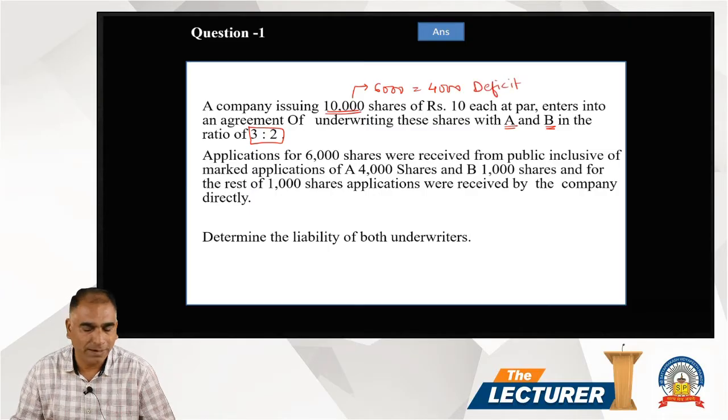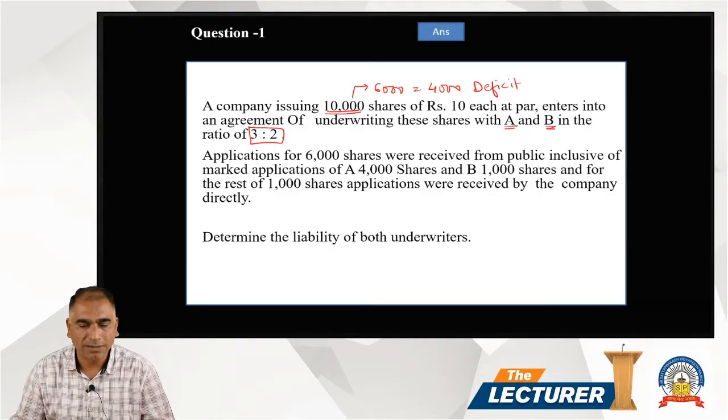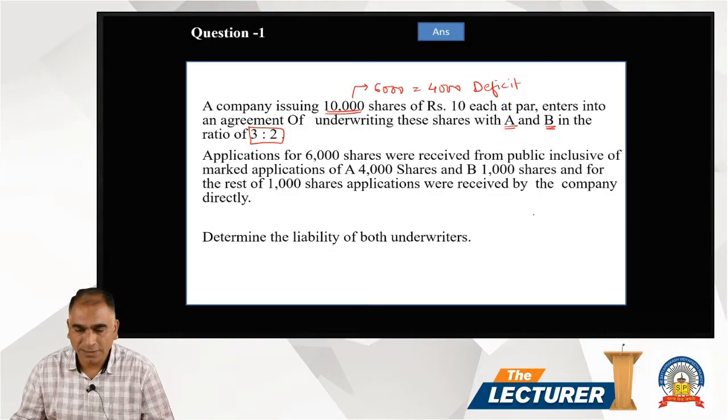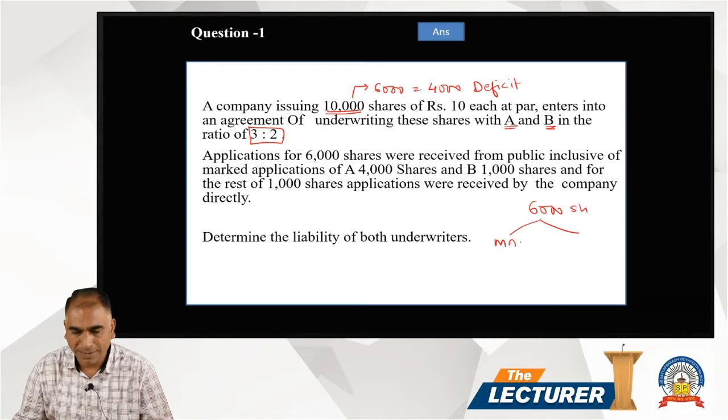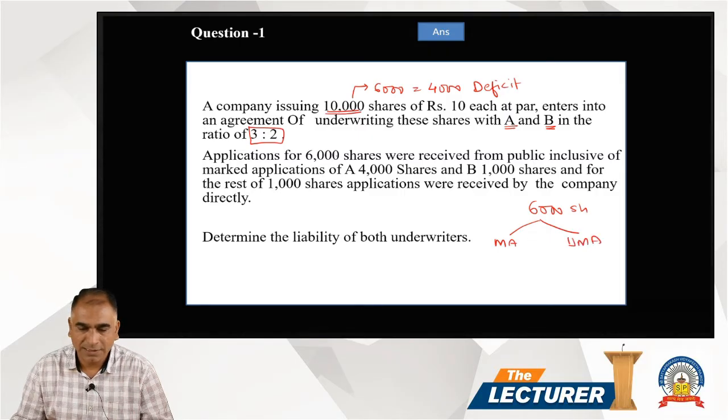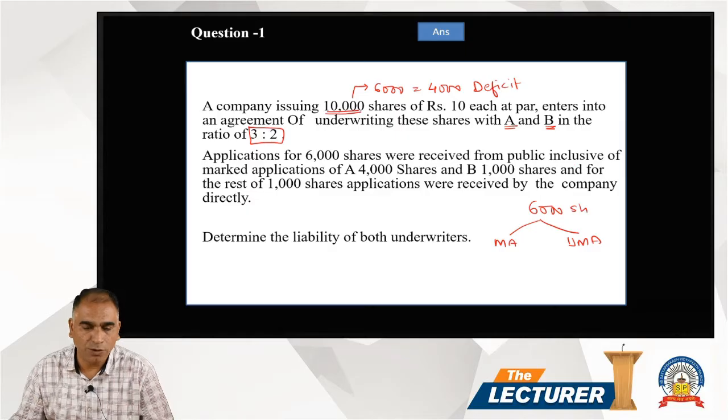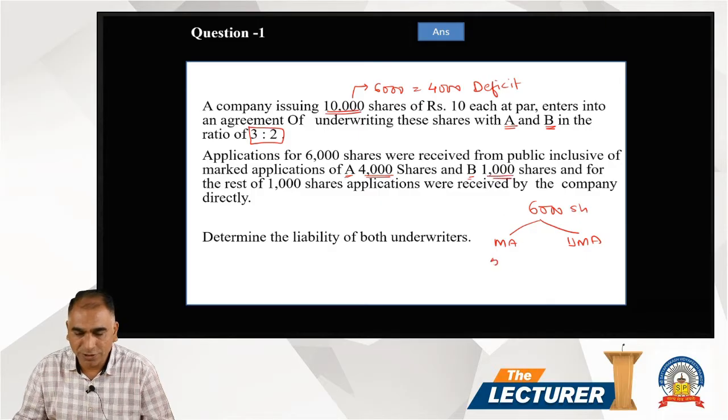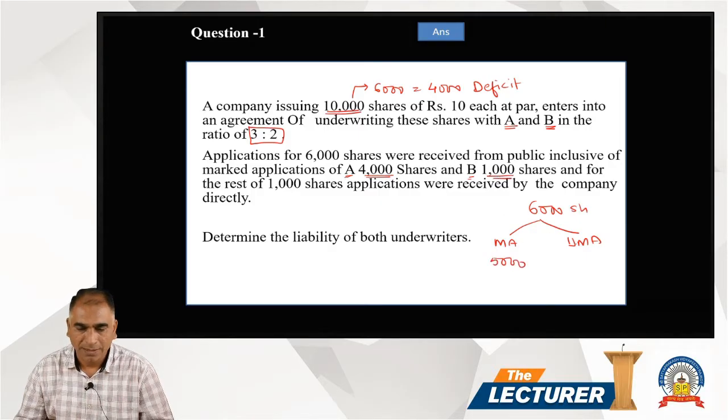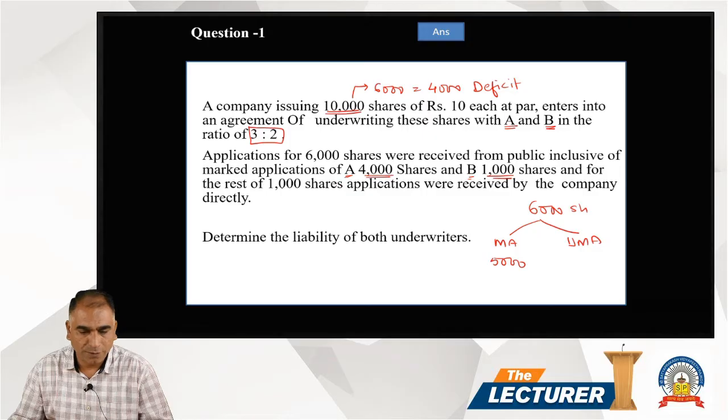Which is to be purchased by A and B, and that is what we have to determine. Applications were received for 6,000 shares from public, inclusive of marked applications: A 4,000, B 1,000, that means marked applications are 5,000. And for the rest, 1,000 shares applications were received by the company directly. This is unmarked application.